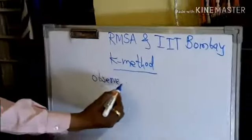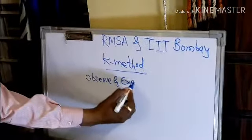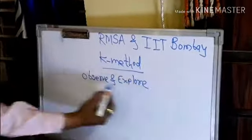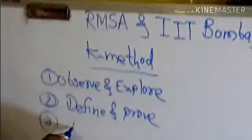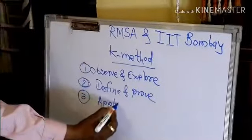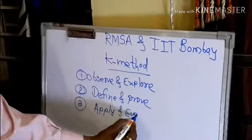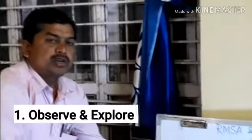These are the three steps: Observe and Explore, second step is Define and Proof, and third one is Apply and Evaluate. As per these three steps, I have to make a video. So I take first step, Observe and Explore.